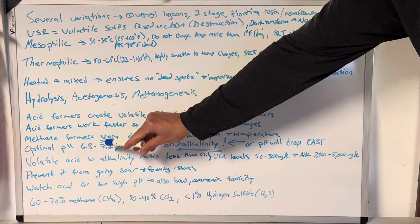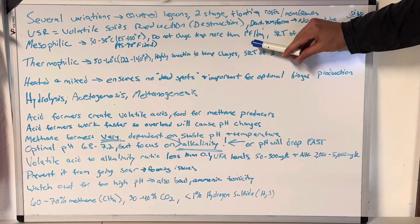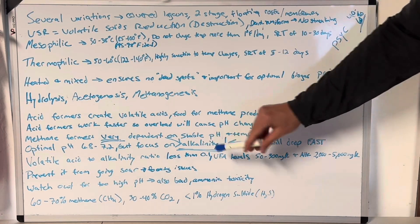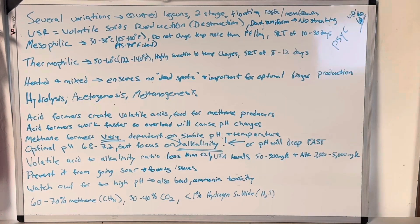Methane formers or producers are very dependent on stable pH and temperature. We already talked about temperature. How do we make sure that the pH is stable? Well, you've got an optimal pH range of 6.8 to 7.2. I'd really like to see it 7 to 7.2 personally. But you don't really focus on pH. That is not the process control you should be looking at. You focus on alkalinity.